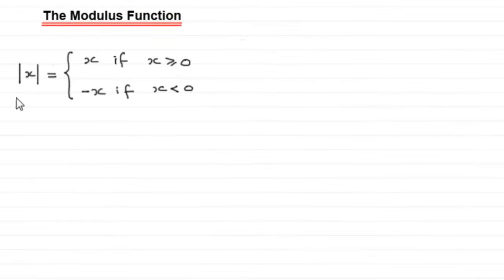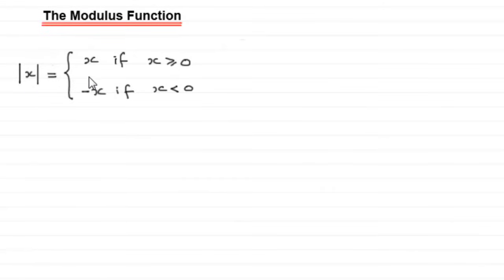Hi, welcome to this tutorial on the modulus function. The modulus function is written with x between two vertical lines. The formal definition given in textbooks is: if x is greater than or equal to zero, a positive value, you just get x. And if x is a negative value, less than zero, you get negative x.